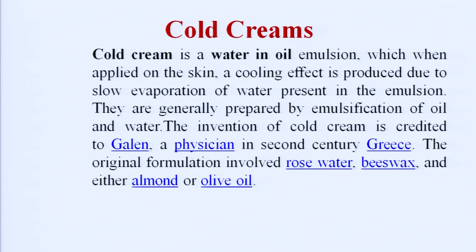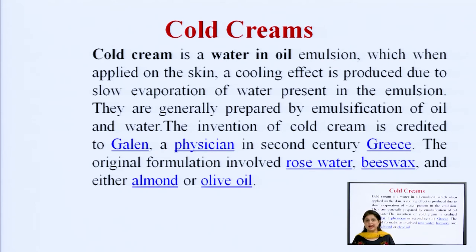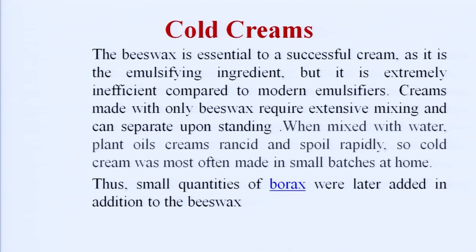The creams prepared by Galen included rose water, beeswax, and olive oil, where beeswax was used as the emulsifying agent. However, nowadays the emulsifiers we use are much more efficient compared to beeswax. Creams made with only beeswax require extensive mixing and can even separate out after extensive mixing. When plant oils were used, the cream would get spoiled easily within a few days of preparation, so cold creams were most often made in small batches at home.